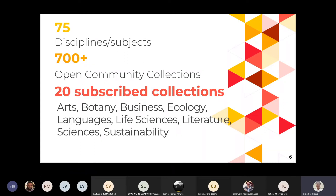También JSTOR tiene, debido a partnerships con museos, archivos y repositorios, sobre 700 open community collections, que en su mayoría son gratuitas. Y la biblioteca tiene 20 colecciones suscritas en todas estas áreas: las artes, idiomas, literatura, sustainability, ciencias, business, ecology. Si cae un poco de todo.